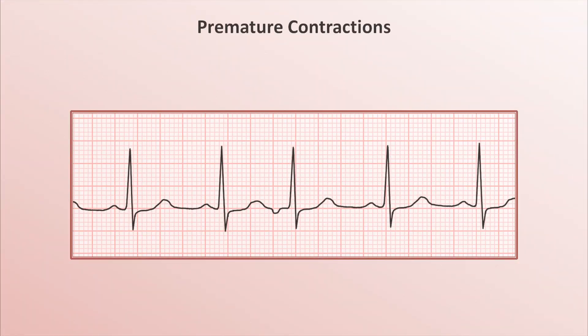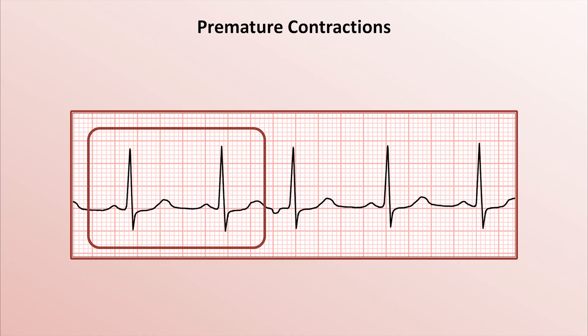Let's start with an example. Here is a very brief rhythm strip. It's not labeled, but I'll tell you that it's lead II, which means that the appearance of the P-wave and QRS complexes in the first two beats are normal — an upright P-wave followed by a normal PR interval, and then a predominantly upright, narrow QRS complex. These are normal sinus beats.